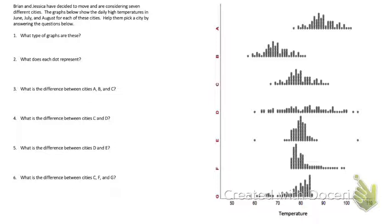Brian and Jessica have decided to move and are considering seven different cities. The graphs below show the daily high temperatures in June, July, and August for each of these cities. Help them pick a city by answering these questions. What type of graphs are these? These are dot plots — seven different dot plots, all sharing one scale on the bottom. That is called a side-by-side or parallel dot plot.